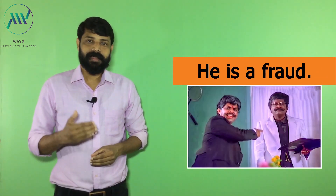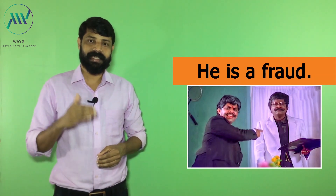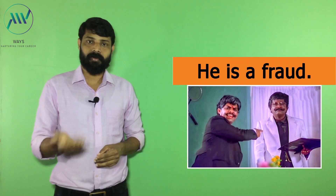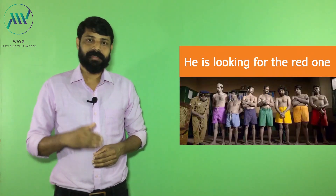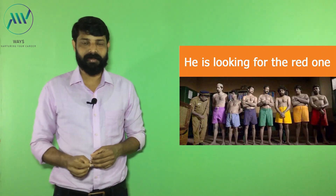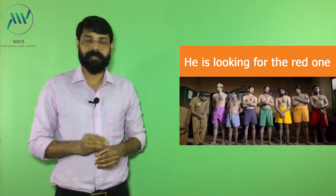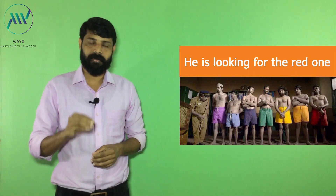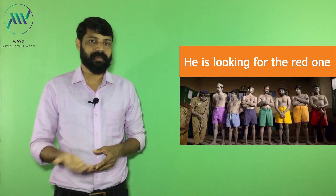The second example: 'He is a fraud.' In this example, we used 'a' as a determiner because the noun 'fraud' starts with a consonant sound. The third one: 'He is looking for the red one.' In this example, we used 'the' because he is not looking for any red — he is looking for the specific red. So we used 'the' as a determiner.